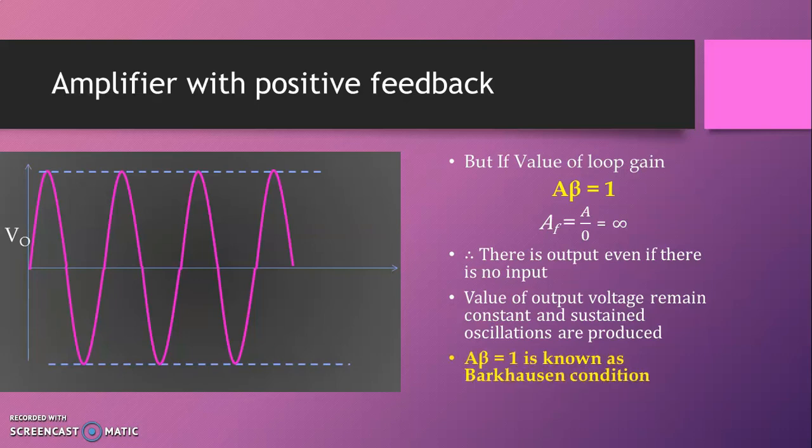The condition A·β = 1 is known as Barkhausen's condition, and that is one of the very essential conditions for the oscillator and for sustained oscillations.